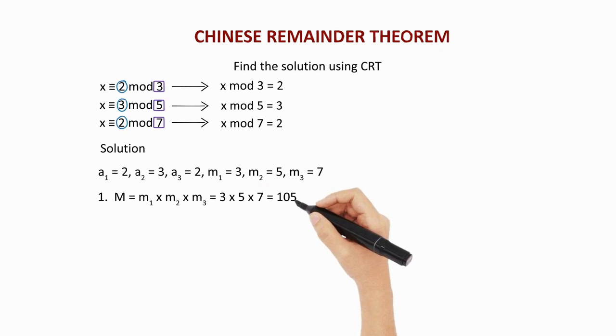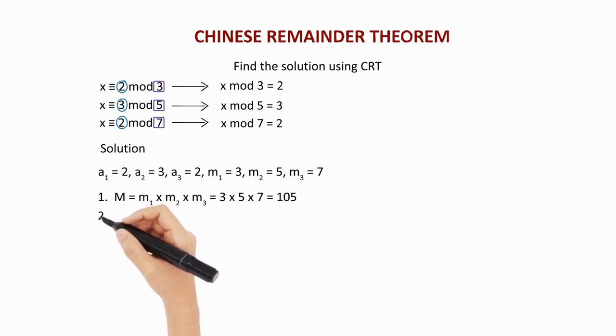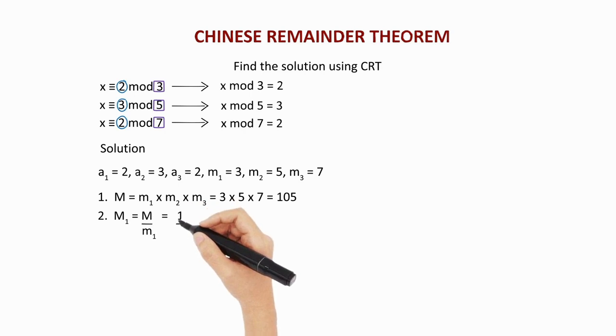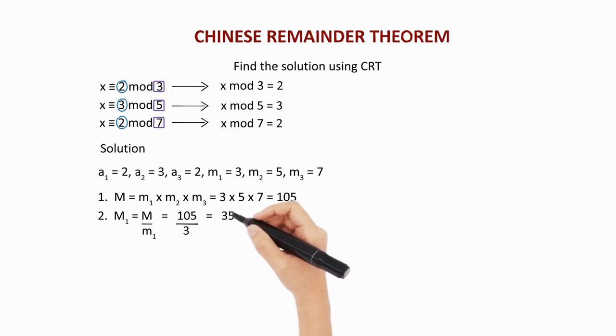Now, the next step is to find capital M1, capital M2, and capital M3. Capital M1 equals capital M divided by m1, which is 105 divided by 3, giving you the answer as 35.